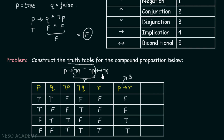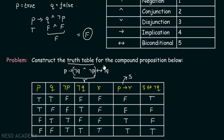Now S is equivalent to not Q — let's calculate this biconditional. False biconditional false is true, false biconditional true is false, true biconditional false is false, true biconditional true is true. So the final answer of this compound proposition is TRUE, FALSE, FALSE, TRUE.